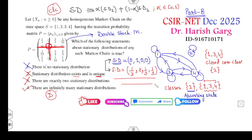If you have more than one stationary distribution, you can write a convex linear combination of them, and you will get infinitely many stationary distributions.